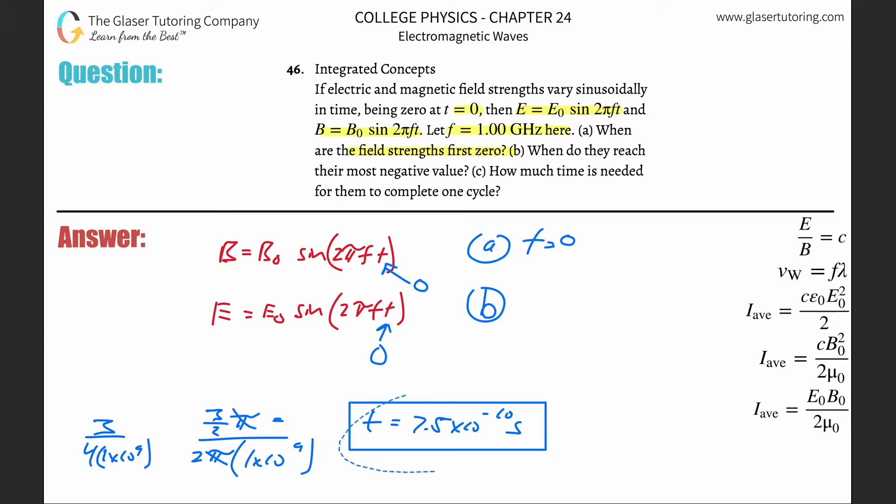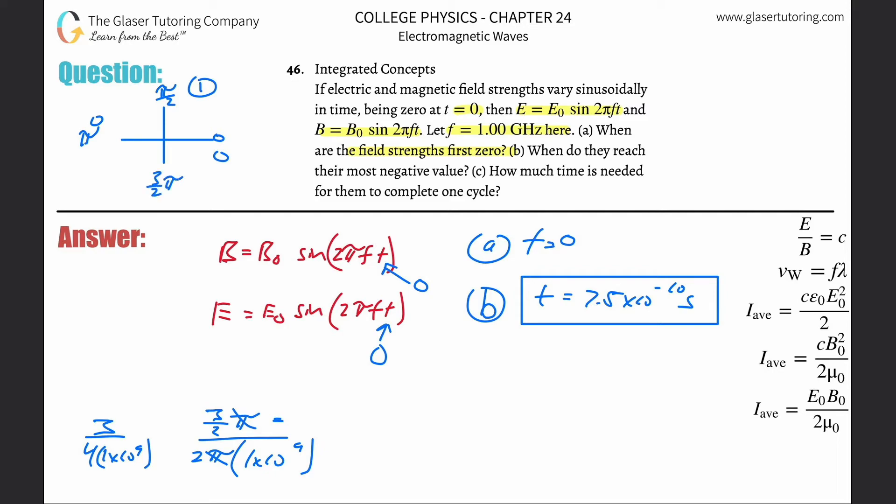And the reason why we know that is because we know as we go around a circle, if you have a coordinate here, when at zero, sine is zero. Then at pi over two, sine is then one. Then at pi, it's back to zero. And then at three halves pi, it's a negative one. So that's why I was doing this.